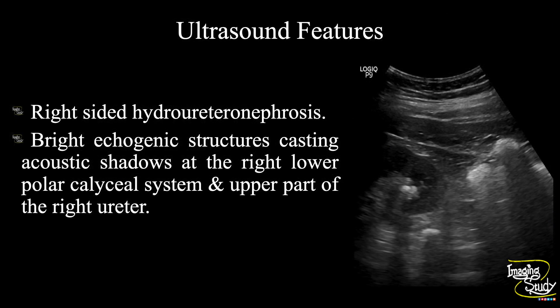So in summary: the right-sided pelvic caliceal system is dilated, and the right ureter is also dilated proximally. There is a bright hyperecogenic structure casting post-acoustic shadow noted at the upper ureteric lumen, indicating ureteric calculus. Multiple hyperecogenic structures are also seen at the lower polar caliceal system of the right kidney, indicating nephrolithiasis.